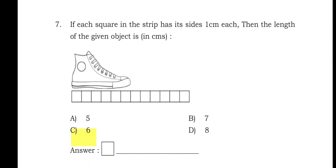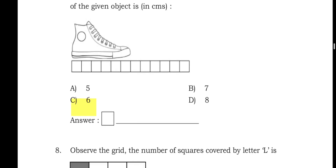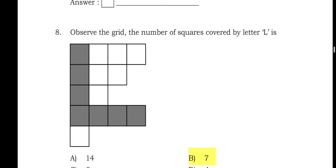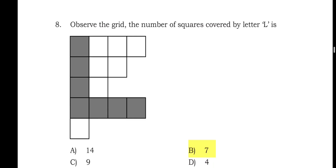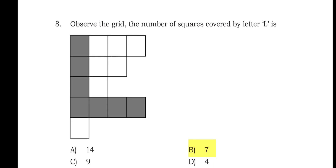Question 7: if each square in the strip has its side one centimeter, then the length of the given object is in centimeters. Counting the blocks under the shoe: one, two, three, four, five, six — it comes to six. So six centimeters; Option C is the right answer.